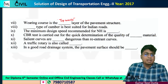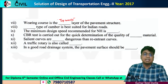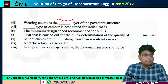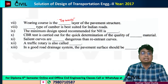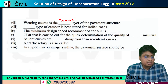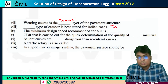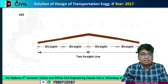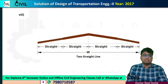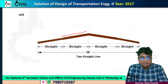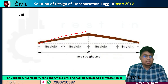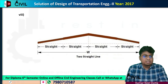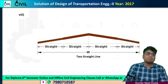Number eight: which type of camber is best suited for Indian roads? The answer is two straight-line camber. Two straight-line camber is best suited for Indian roads. Camber is provided for effective drainage purposes.